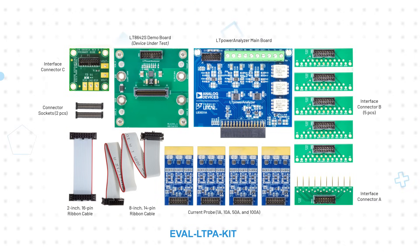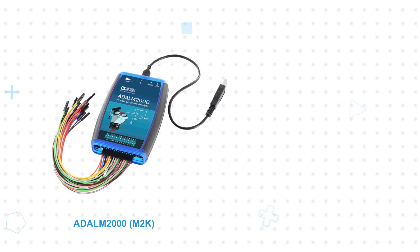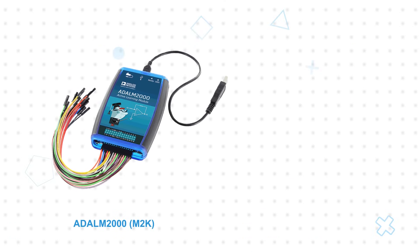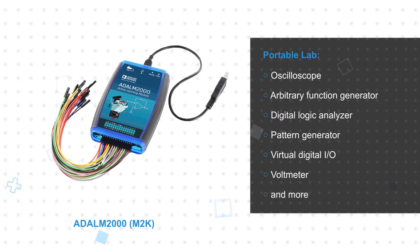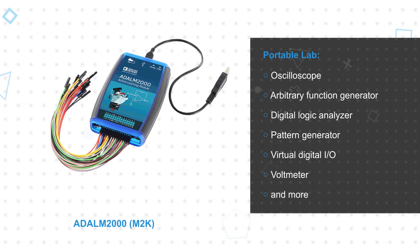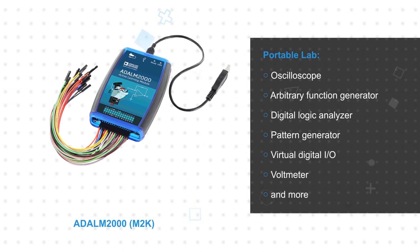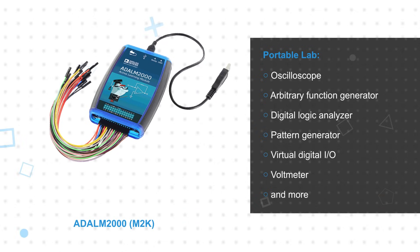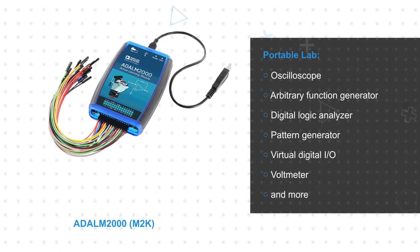An example DUT based on the LT8642S is also included. The kit is used in conjunction with the ADALM2000 Active Learning Module, or M2K. The M2K is a USB-powered module with 12-bit ADCs and DACs that allow it to act as a two-channel oscilloscope, two-channel arbitrary function generator, and many other instruments. The LT Power Analyzer Kit extends these capabilities for power analysis.